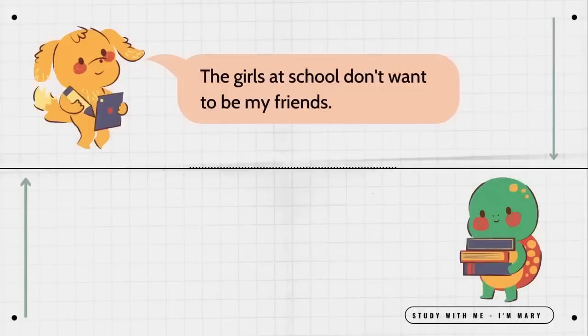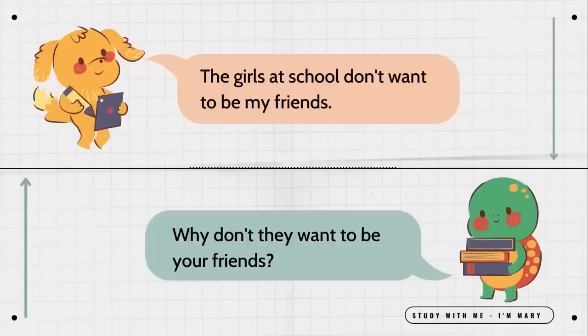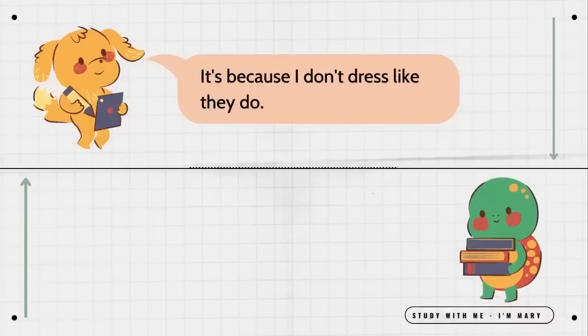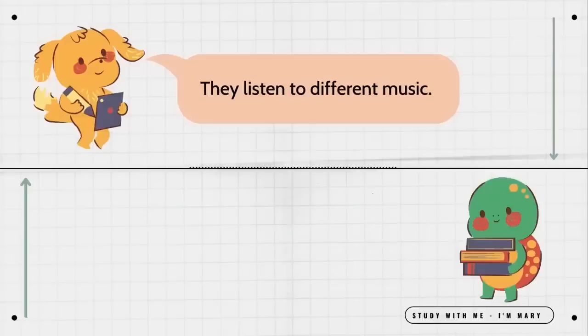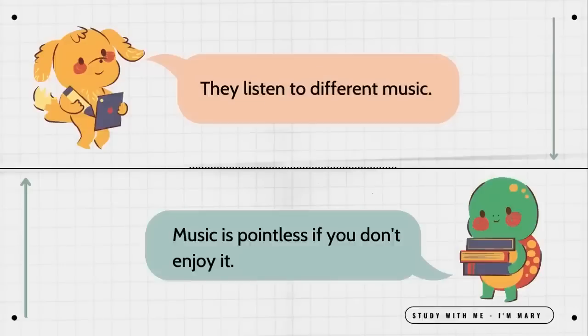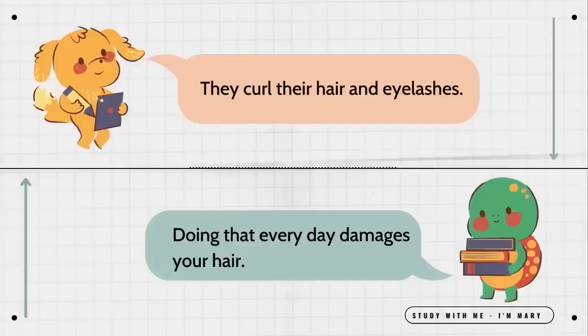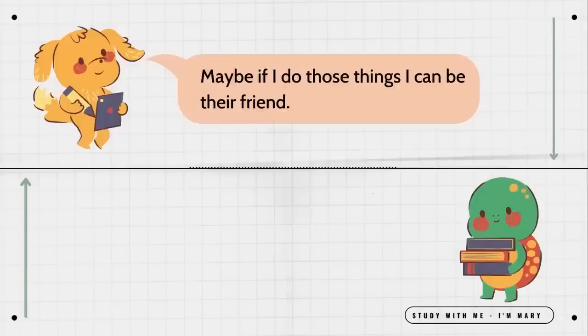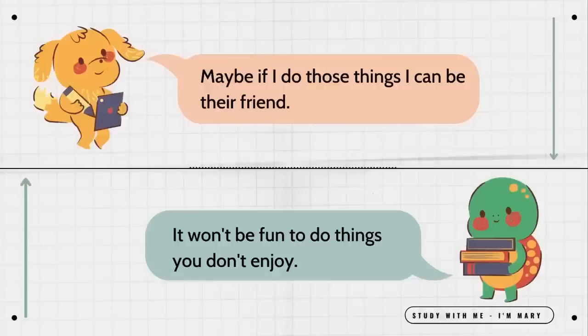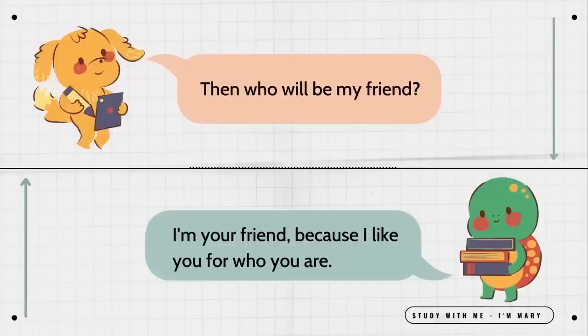The girls at school don't want to be my friends. Why don't they want to be your friends? It's because I don't dress like they do. There is nothing wrong with the way you dress. They listen to different music. Music is pointless if you don't enjoy it. They curl their hair and eyelashes. Doing that every day damages your hair. Maybe if I do those things, I can be their friend. It won't be fun to do things you don't enjoy. Then who will be my friend? I'm your friend because I like you for who you are.